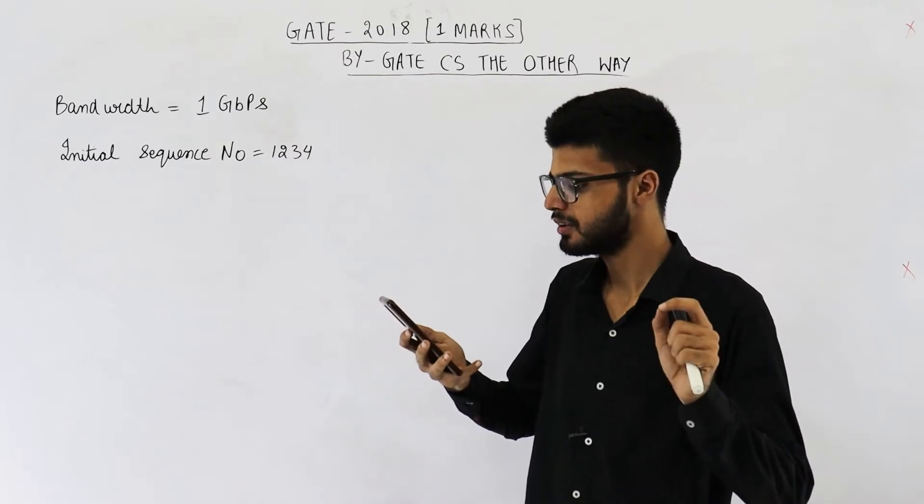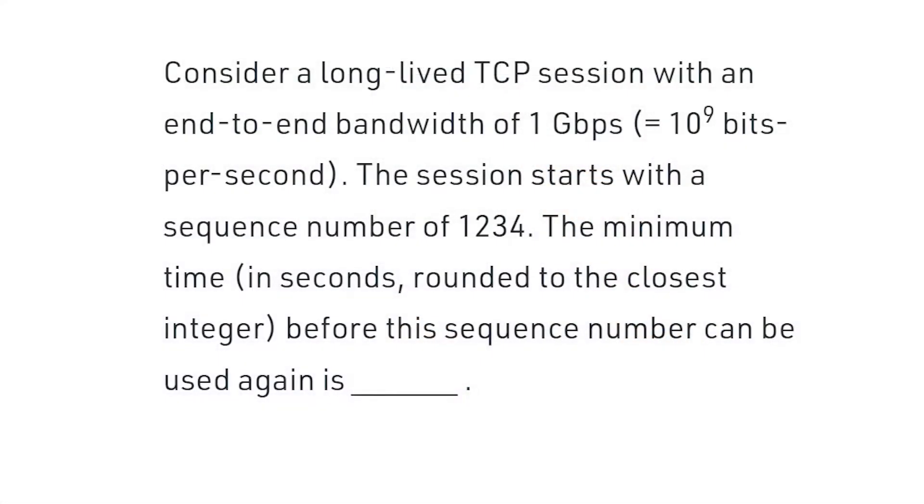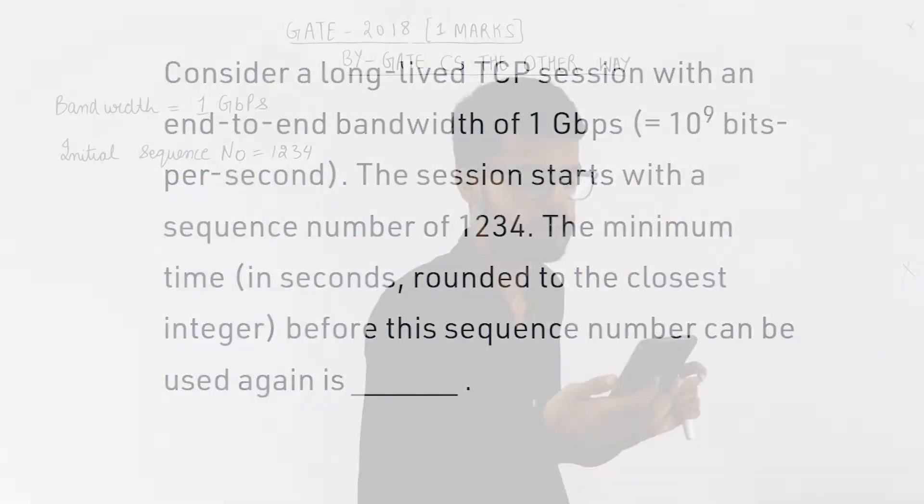Just read the statement. It says, consider a long-lived TCP session with end-to-end bandwidth of 1 Gbps. It's given that 1 Gbps means 10 raised to the power 9 bits per second. The session starts with a sequence number of 1234. The minimum time in seconds rounded to the closest integer before the sequence number can be used again is.